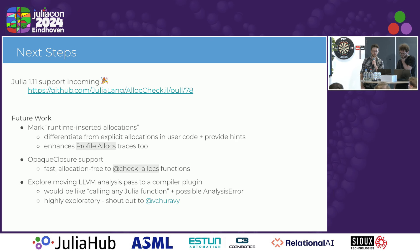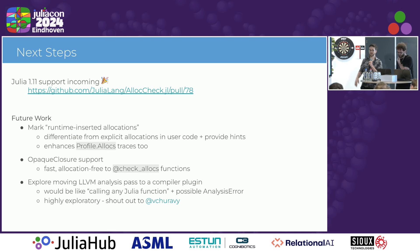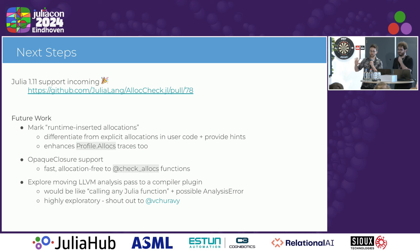To close, we're happy to say we just updated AllocTrack for Julia 1.11, so you're ready to try it on the latest RC. In the future, the main thing we'd like to fix is what we talked about in terms of these runtime-inserted allocations — we want to give you a hint about why they're there and separate them from the ones you explicitly wrote in your own code. Thank you very much.